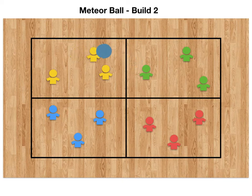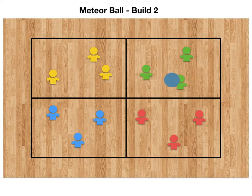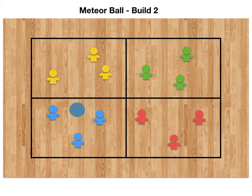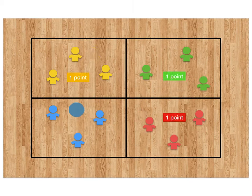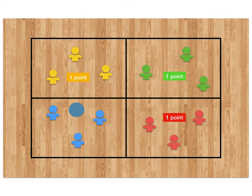As you can see here, the ball is being passed around between the different teams, but as soon as that ball hits the ground in another team's area, the other three teams score a point.